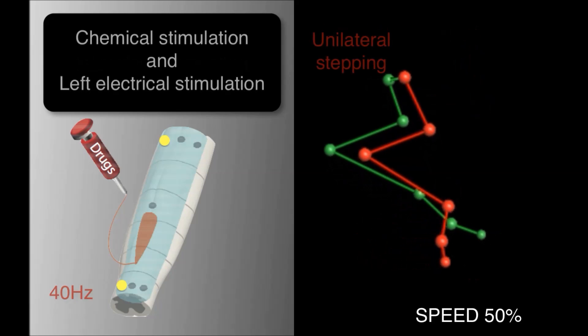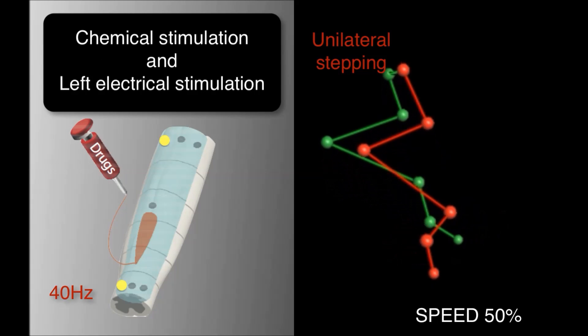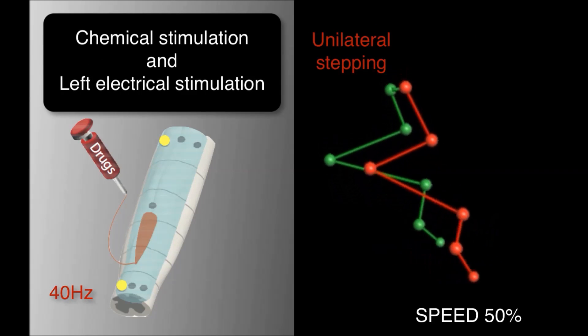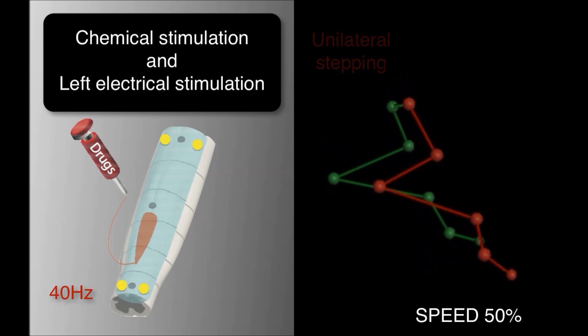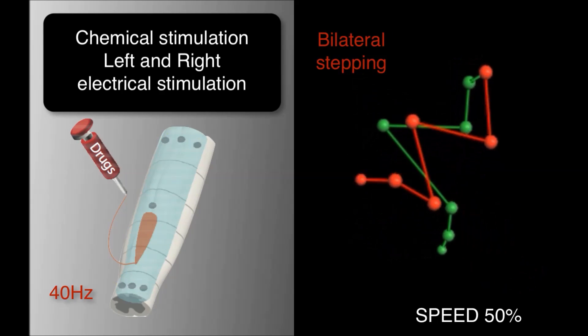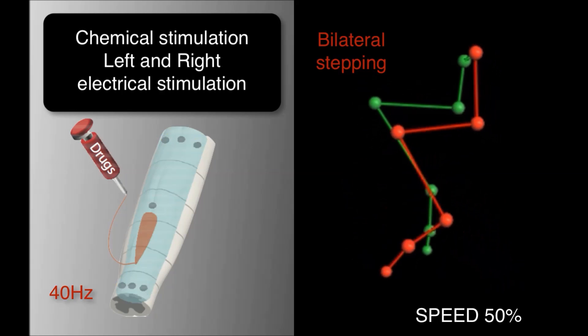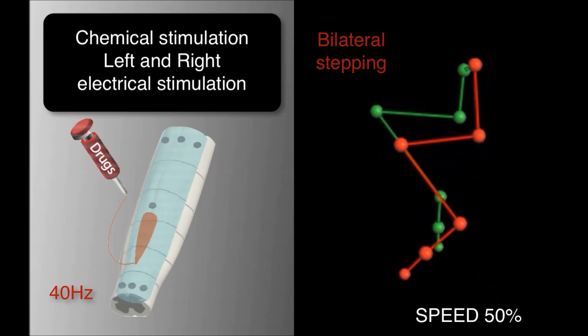When adding unilateral electrical stimulation, rats instantly regained movements on the stimulated side. Concurrent chemical and bilateral electrical stimulation promoted weight-bearing locomotion of both legs.